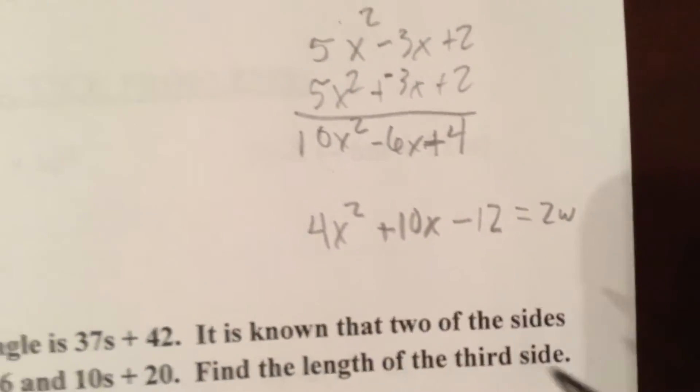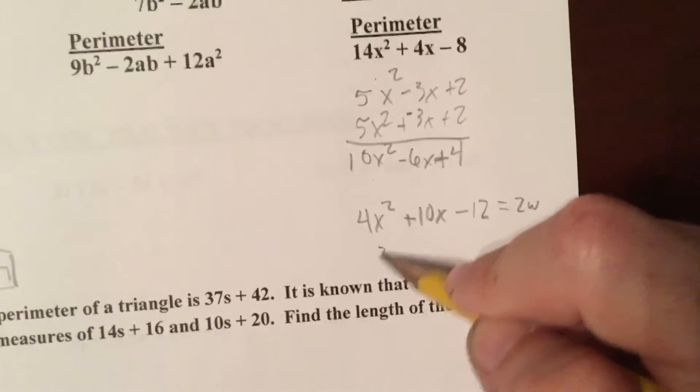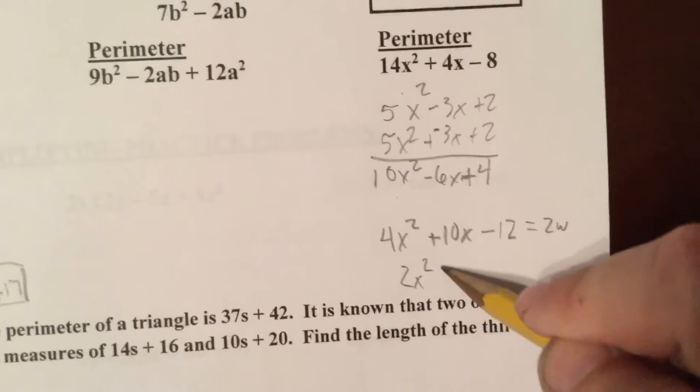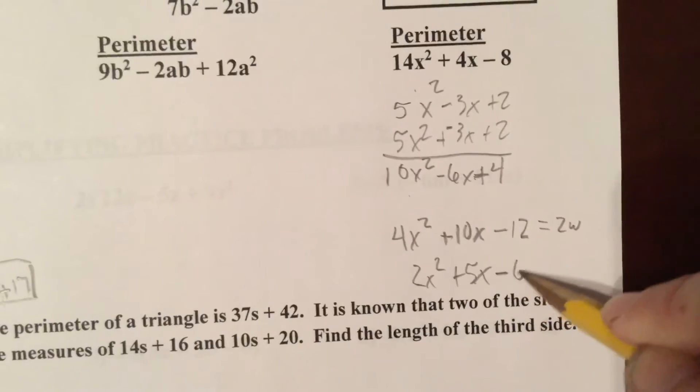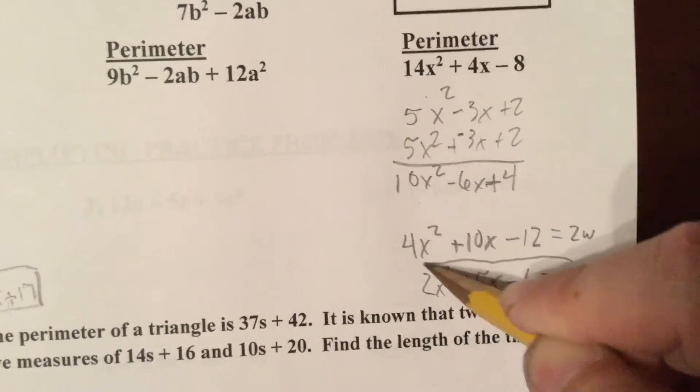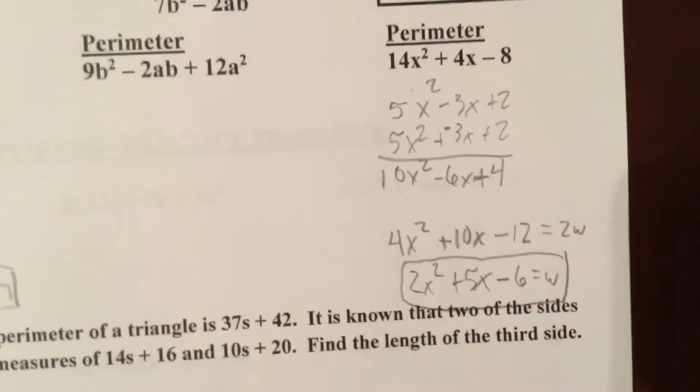So 4 divided by 2, 10 divided by 2, and negative 12 divided by 2 would equal my missing width.